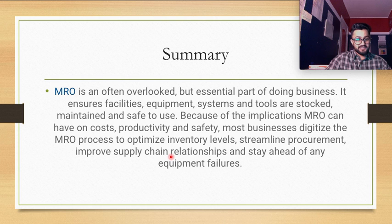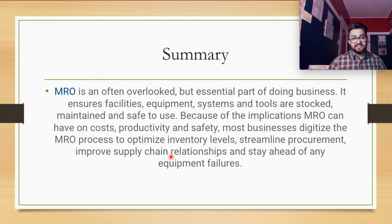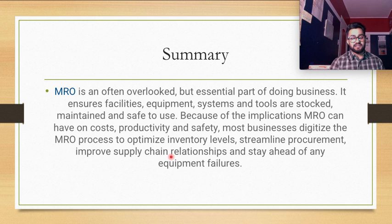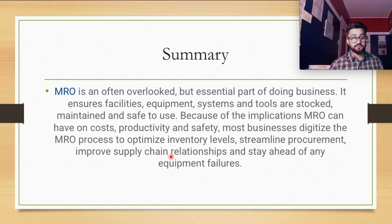When we talk about MRO as Maintenance, Repair and Operation, it mainly covers whatever operations are ongoing — for example, in a factory with machines. We have to make sure the machines are performing well and that we have proper inventory on hand. The main purpose of MRO is to avoid failures, and in case failures do occur, you have proper equipment to repair them so that operations continue to run smoothly.